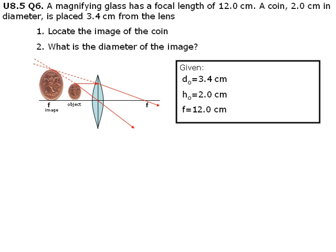We are given the distance of the object is 3.4 cm, height of the object is 2.0 cm, and the focal length is 12.0 cm. We want to find the distance of the image from the lens for our first question, and the height of the image, which is the same thing as the diameter for the second part.